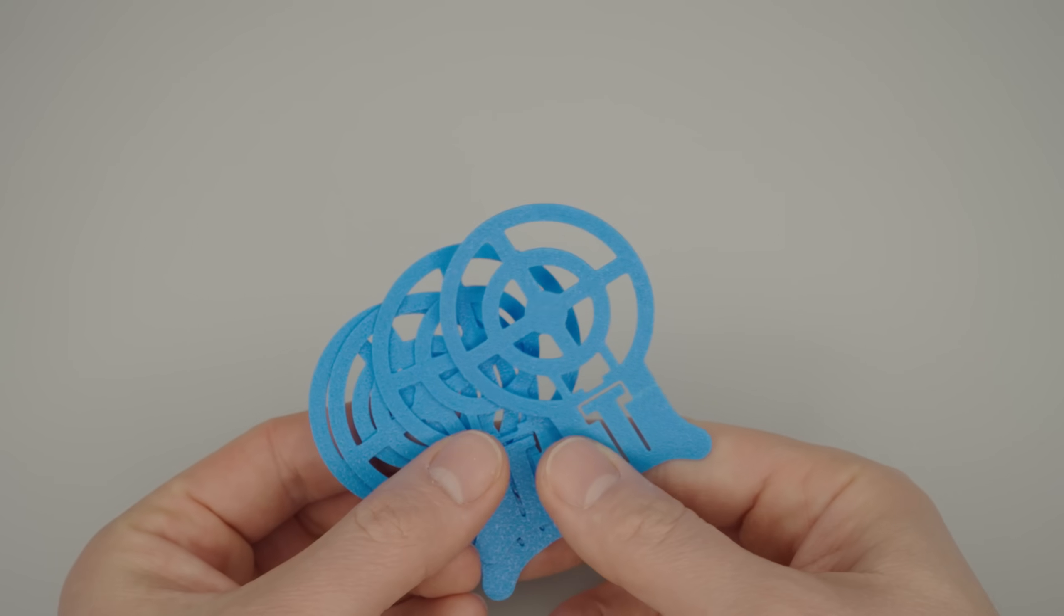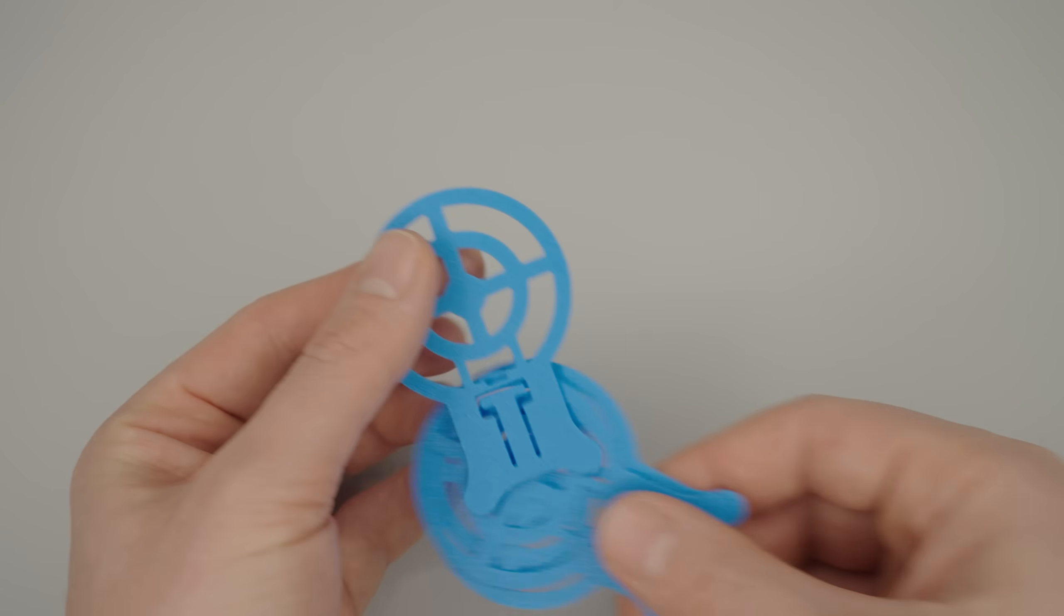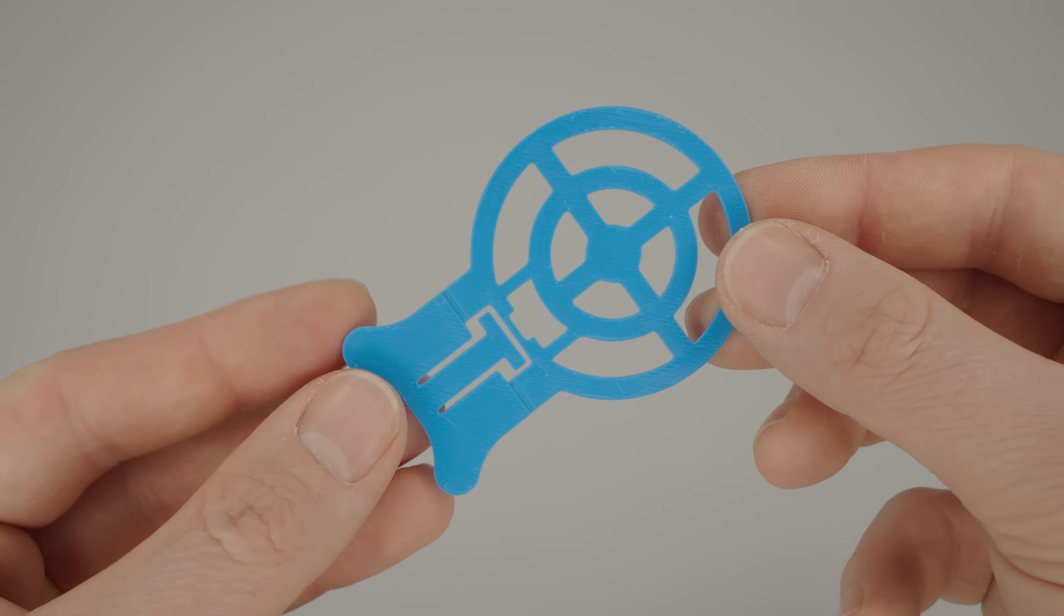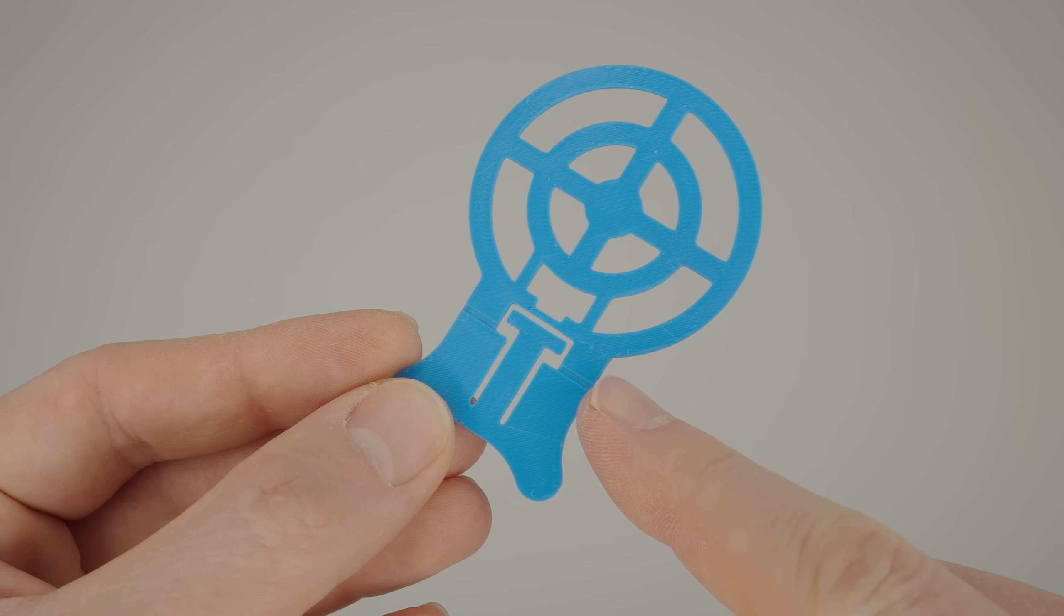To wrap things up, we print the targets from the model file. But before we can use them, we have to bend them into shape. First, find the notch. It needs to be on the inside when you bend it.